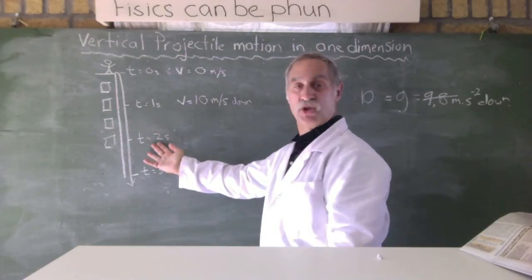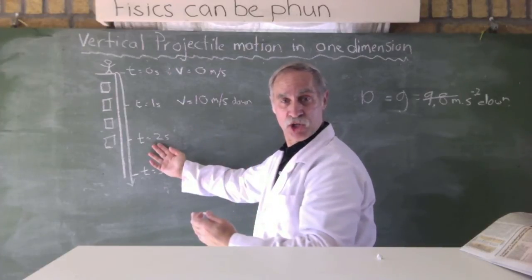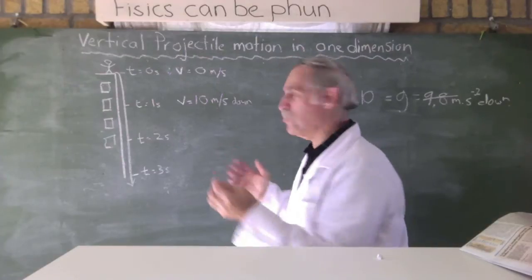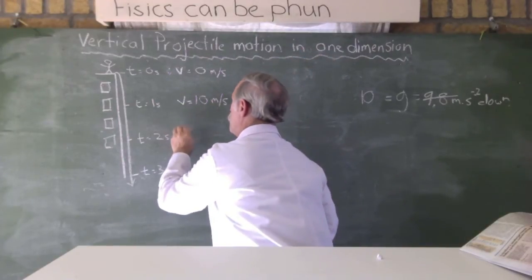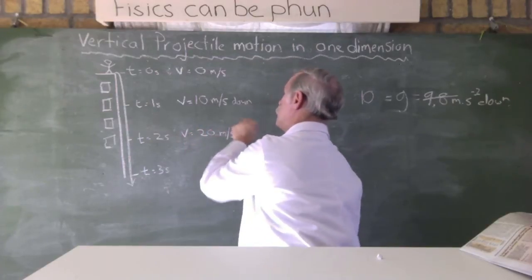And after two seconds, over the next second, it gains the velocity on how much? Another 10. Another 10. That's how acceleration works. So, V will be equal to 10 plus 10, 20 meters per second down.